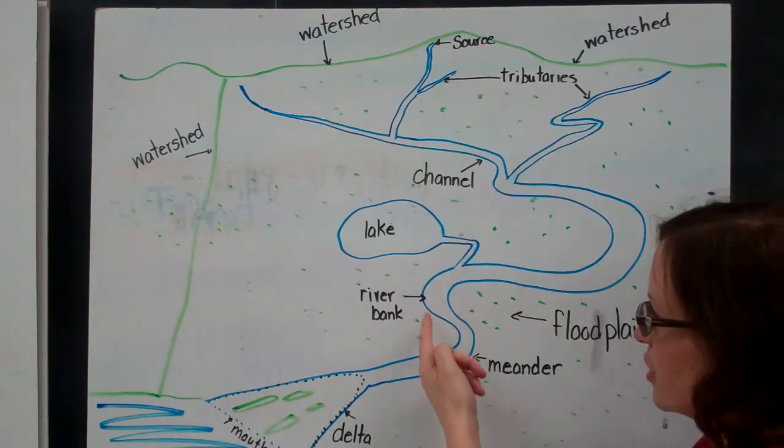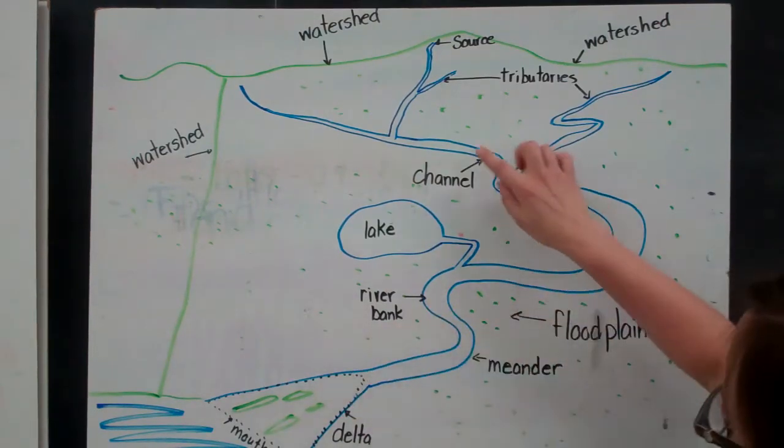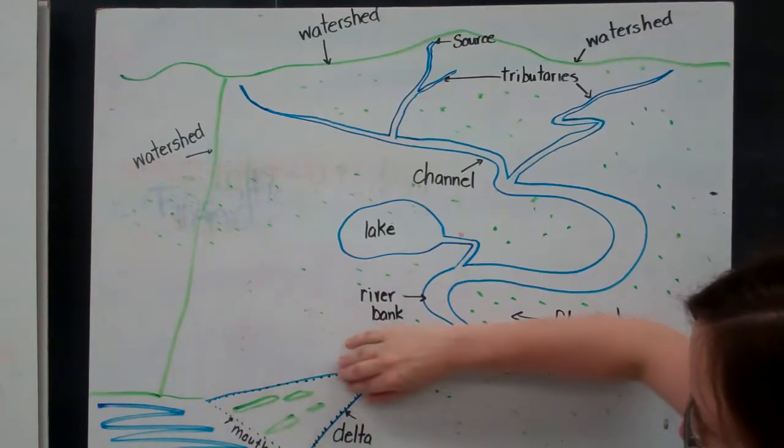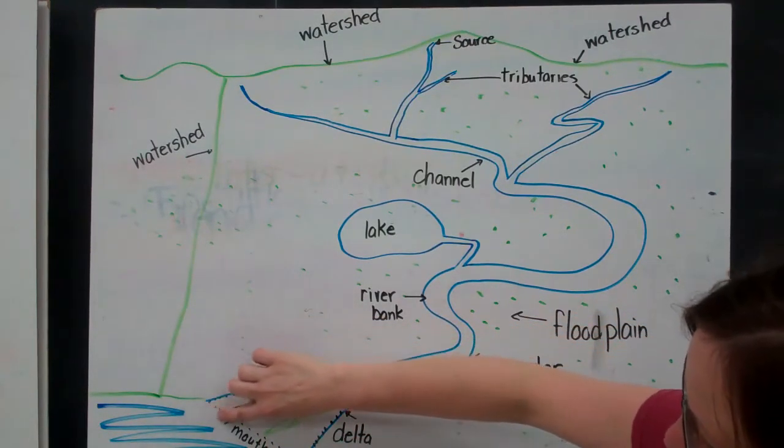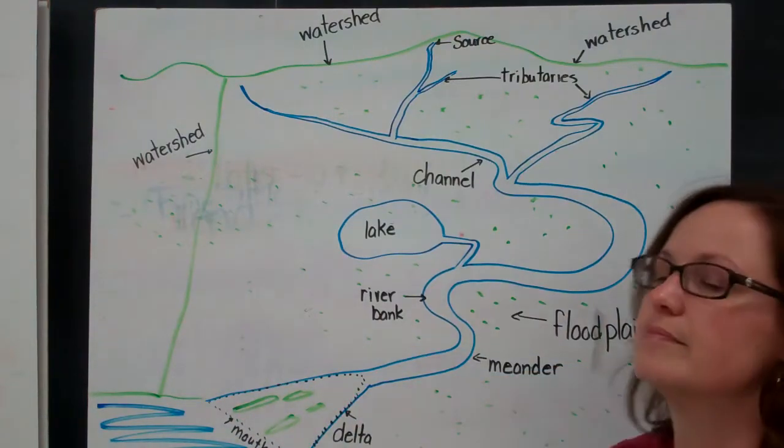We have a couple of meanders, those curves and bends. And then here is our delta. So our river system comes down and it goes into this triangle shape as it enters into a larger body of water here at the mouth. River systems.